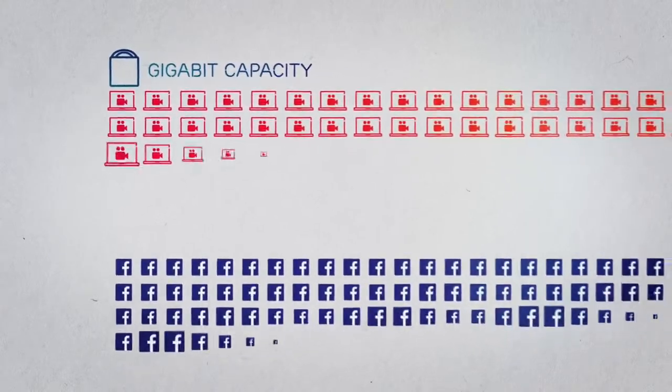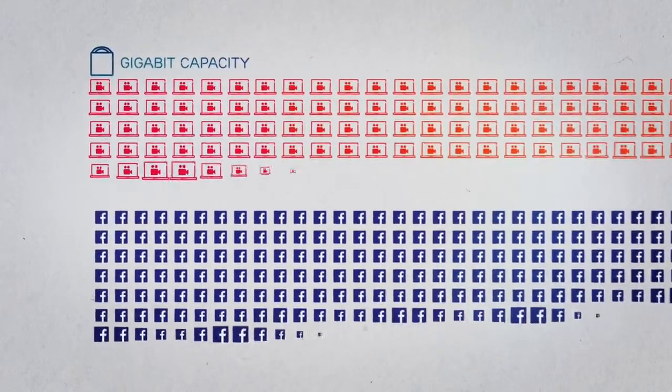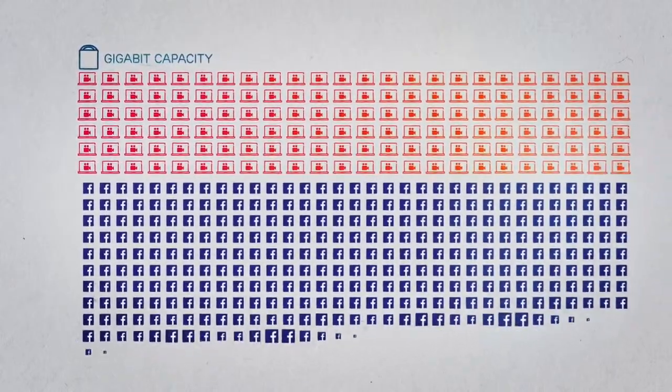He found that a microwave link can provide gigabit capacities, enough for hundreds of people to stream uninterrupted television, or millions of Facebook updates.